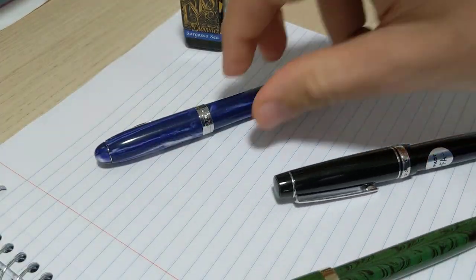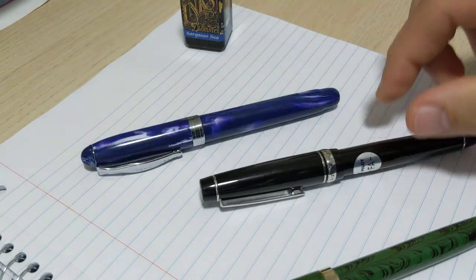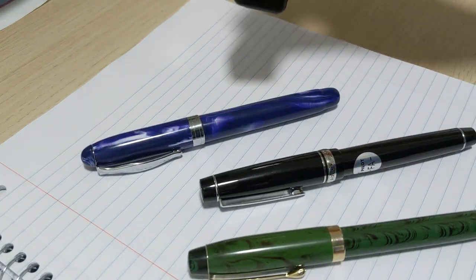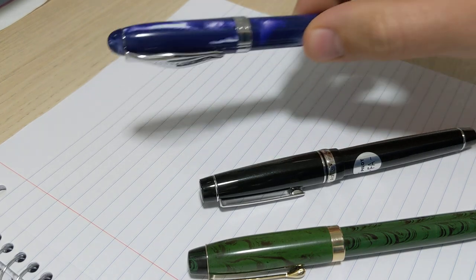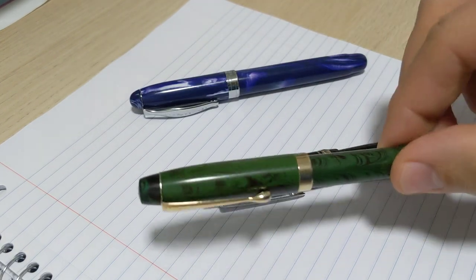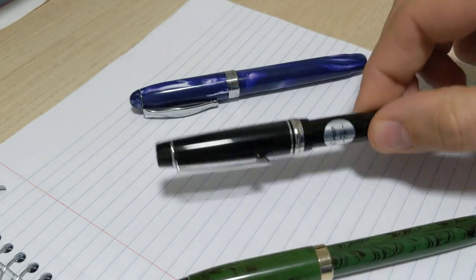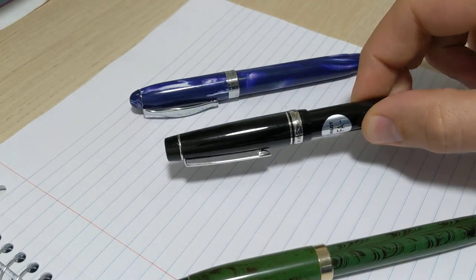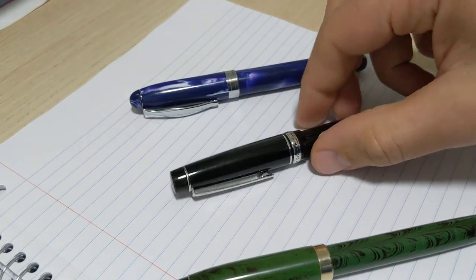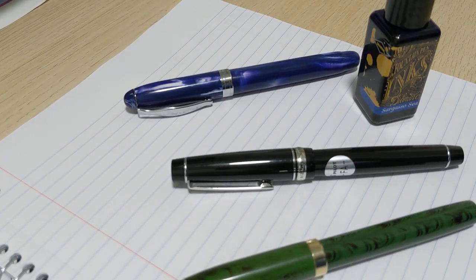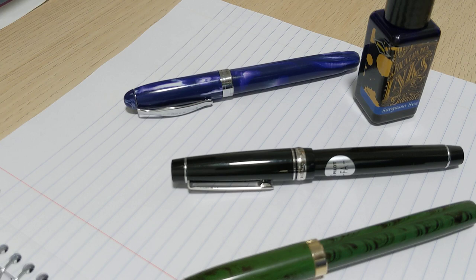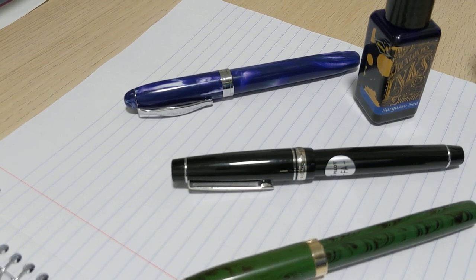So we're going to do three different pens. I hadn't seen this exact comparison so I thought why not. We got the Noodler's Ahab, we got the Fountain Pen Revolution, and we got the Pilot 912. They all have the exact same ink, I filled them all yesterday so the ink's been sitting in for a day and they're ready to go.